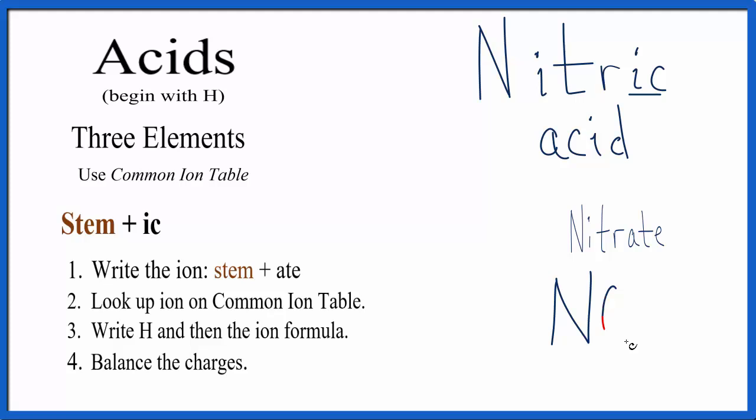So we remember NO3 minus and we'll go back to our set of rules and we write NO3 and it had a minus charge. Next we put H in front and we know H is plus, and we look to balance our charges. We have a plus and a minus, those cancel out.